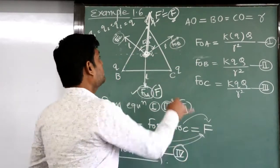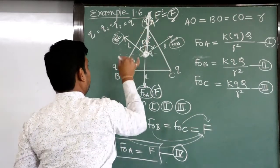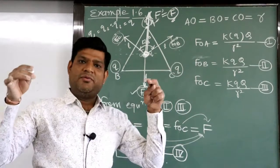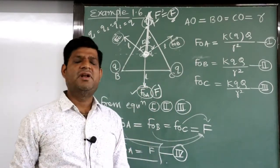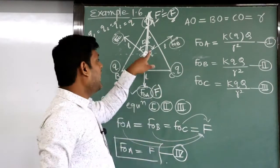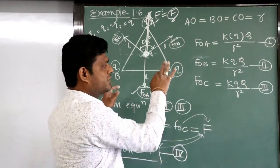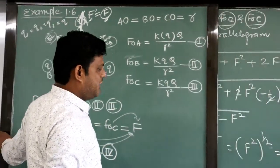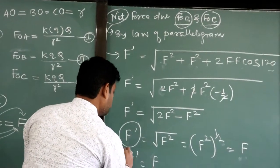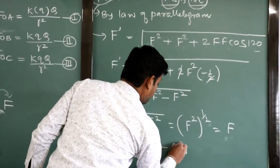We can conclude that when three equal charge particles are kept on the vertices of an equilateral triangle, the resultant net force at the center becomes zero. This is equation 5: F' = F.